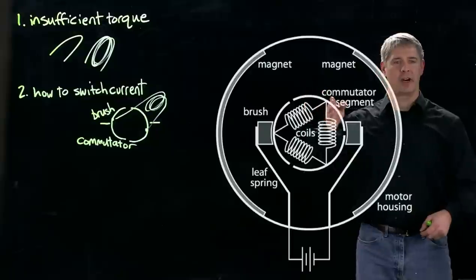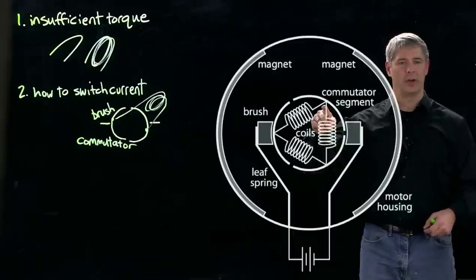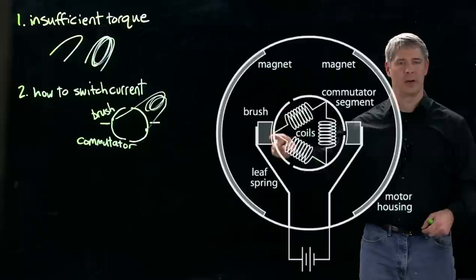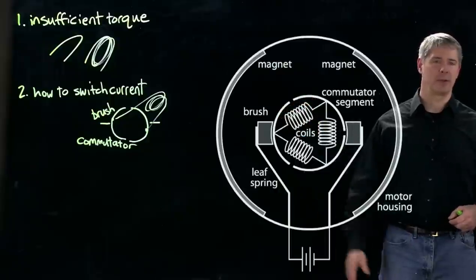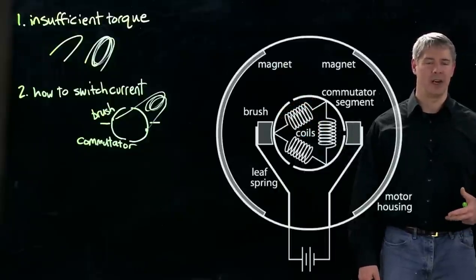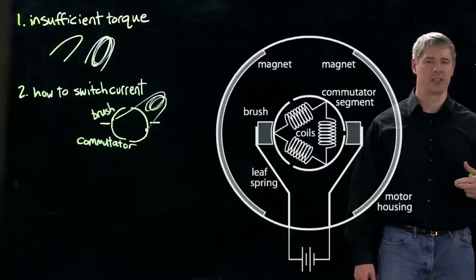For example, this commutator segment here has a coil running from that down to this commutator segment, as well as a coil running from here over to this commutator segment. You can see as this motor rotates, different commutator segments come in and out of contact with the two brushes, thereby energizing that coil or de-energizing it.